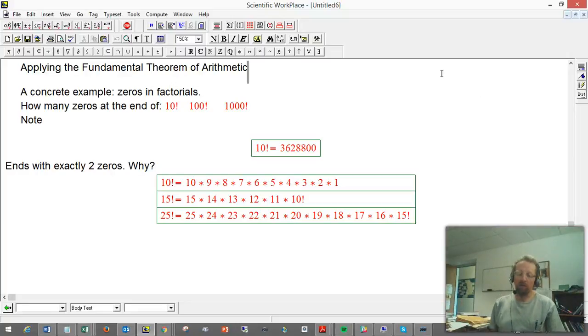So let's do a problem applying the fundamental theorem of arithmetic now that we know it. It's a cute concrete example, and that's zeros in factorials. So the question is, how many zeros are at the end of n factorial? And we'll do three cases.